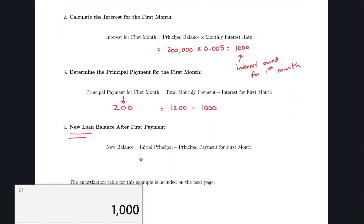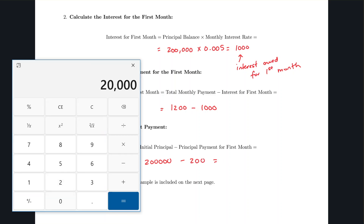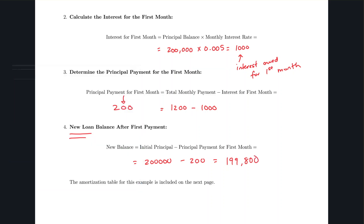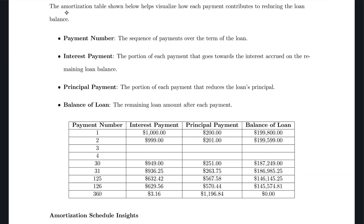Our new loan balance after month one is $200,000 minus the $200 principal payment, leaving $199,800. For month two, multiply $199,800 by 0.005 to get $999 in interest. Subtracting $999 from the $1,200 monthly payment, $201 goes to principal.